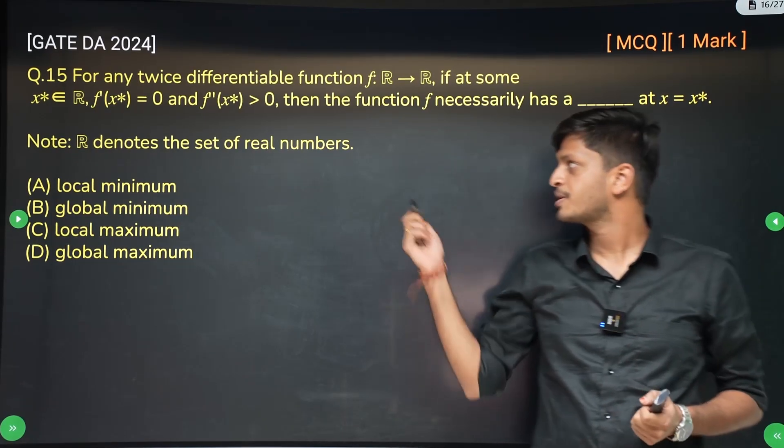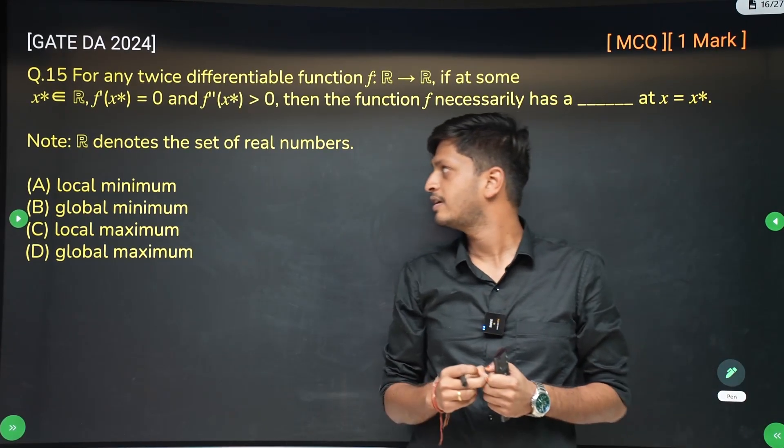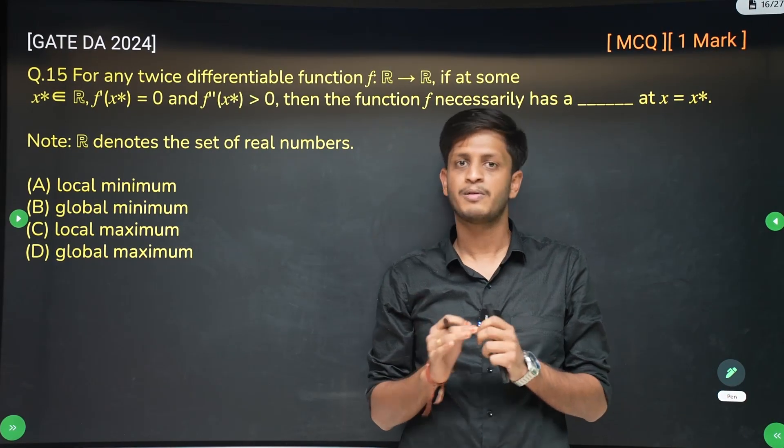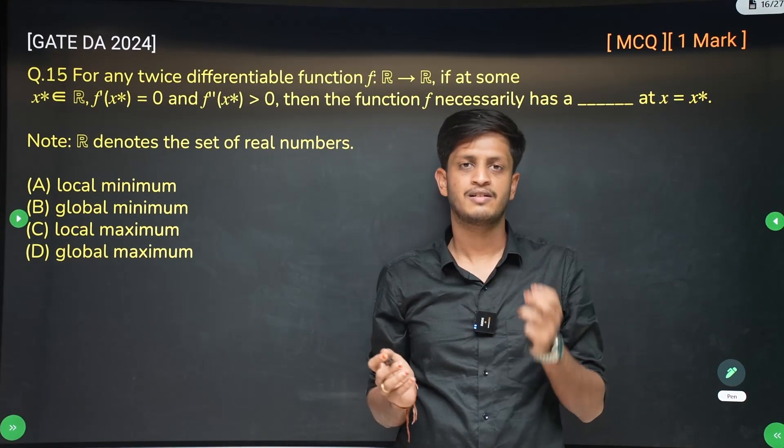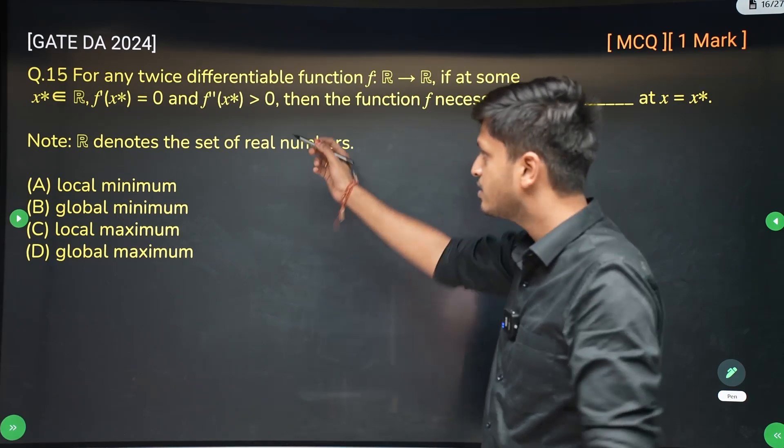Hi, so this is question number 15 from GATE 2024. Very simple problem on calculus — optimization, I would say.